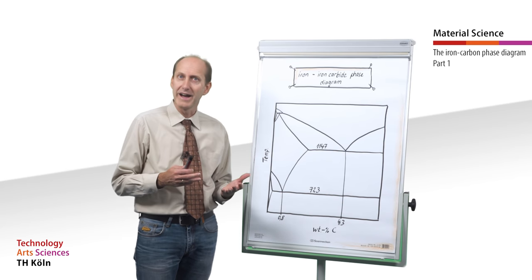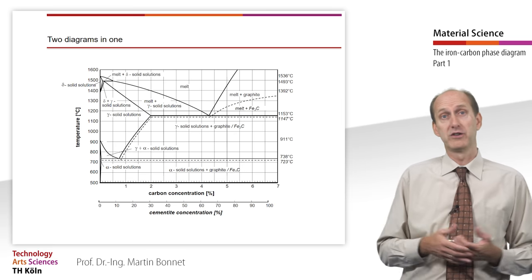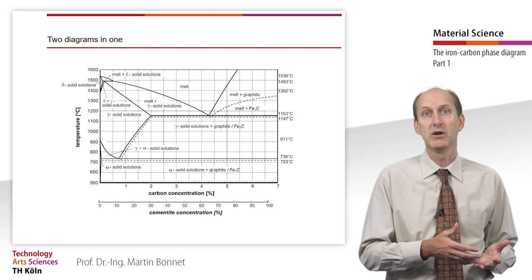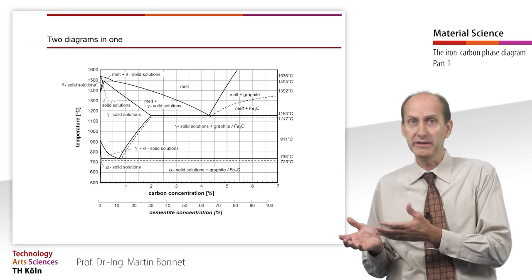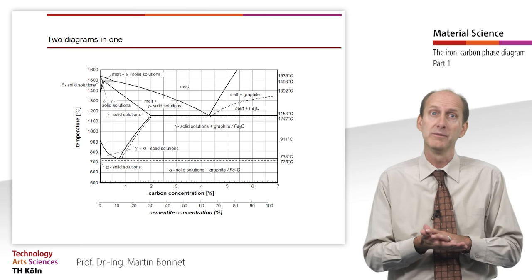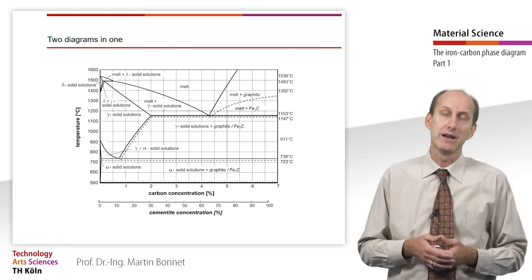If you place both diagrams, the iron-carbon phase diagram for the stable system and the iron-iron carbide diagram for the metastable system on top of each other, we will see a slight shift of some points and phase boundaries.